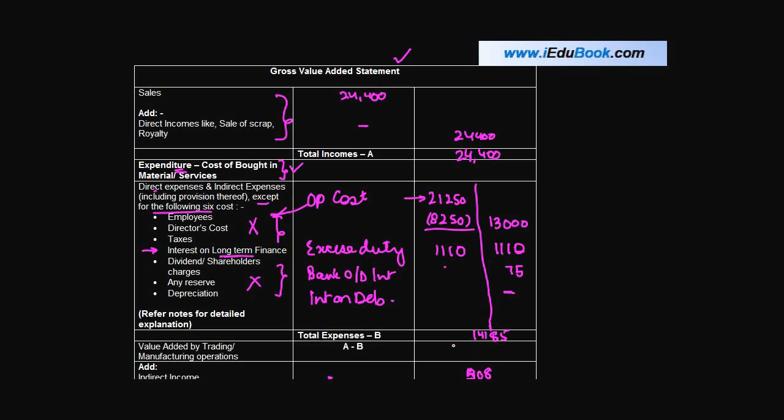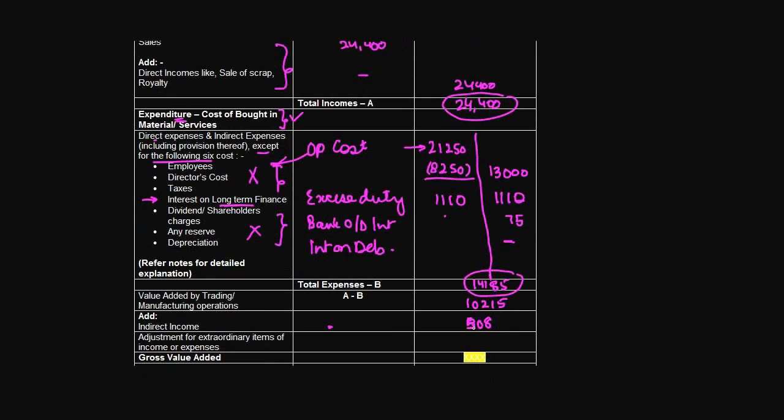Your total expenses will now come to 14185. Your value added by trading operation will be the total of income minus this number, which is 10215. To that, you add 508 and you get 10723. This is your gross value added.